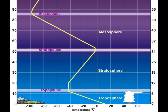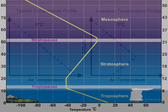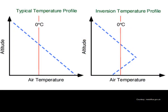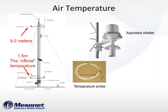Temperatures in the lowest level of the atmosphere, known as the troposphere, normally become cooler with height. During an inversion, temperatures near the ground surface are cooler and increase with height. An inversion observed by the Mesonet is the difference in temperatures between 5 feet and 30 feet, or in metric, 1.5 meters and 9 meters.